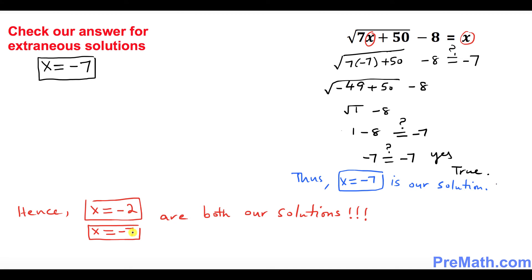So that means we got both x equals negative 2 and x equals negative 7 are both our solutions. Thanks for watching and please subscribe to my channel for more exciting videos.